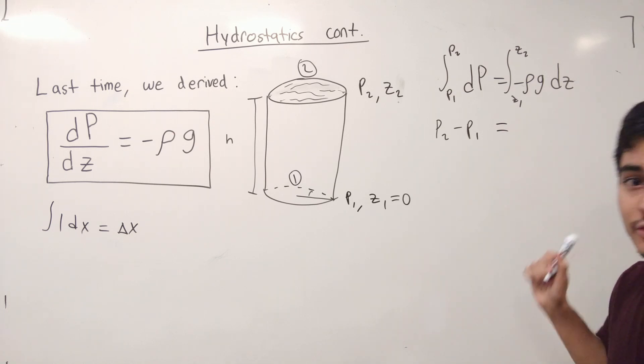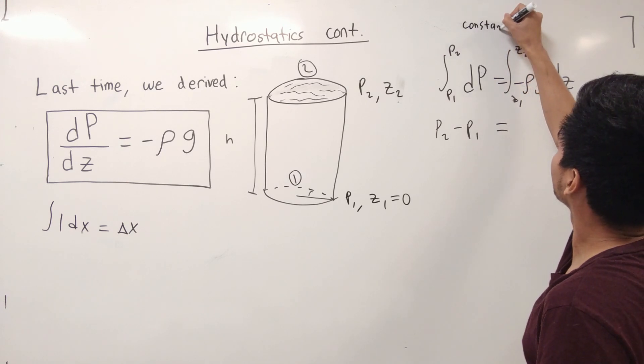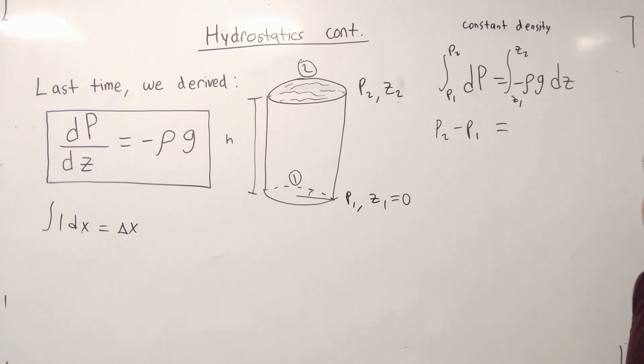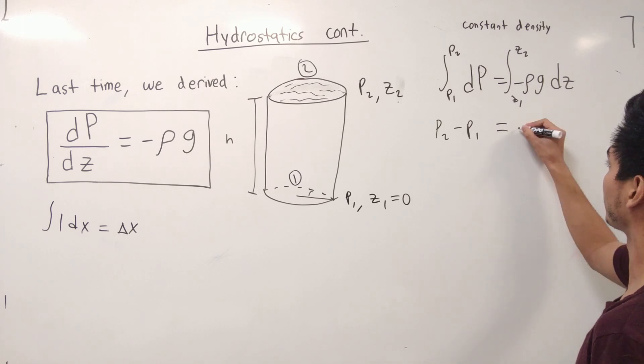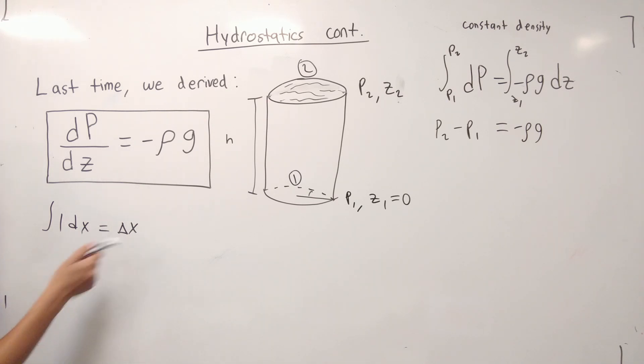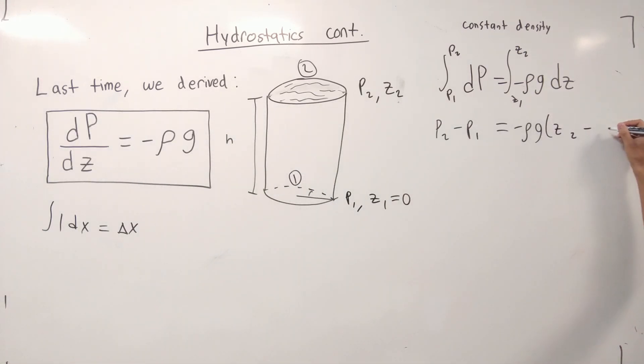So the integral of dP is going to be P2 minus P1. And what about this guy? Now, at constant density and constant gravitational constant, it's a constant, we can pull it out of the integral. So it's going to be negative rho g, and very similarly, we have a similar boundary for dZ, and it's going to be delta Z, or plugging in boundaries is going to be Z2 minus Z1. That looks pretty good. That looks pretty nifty.